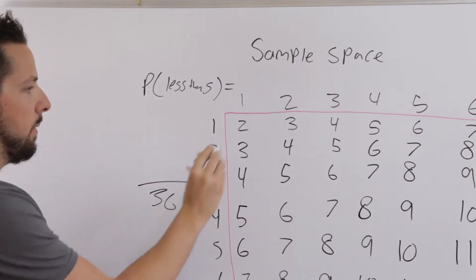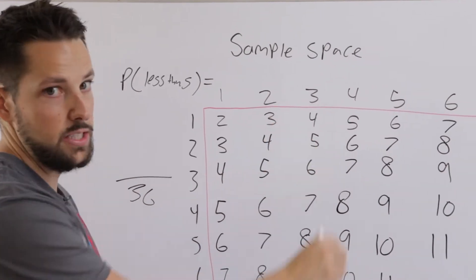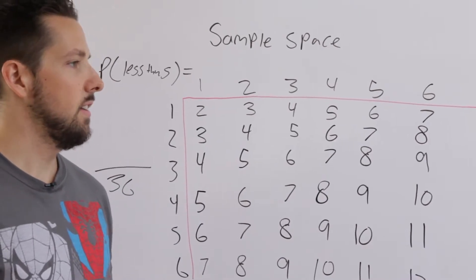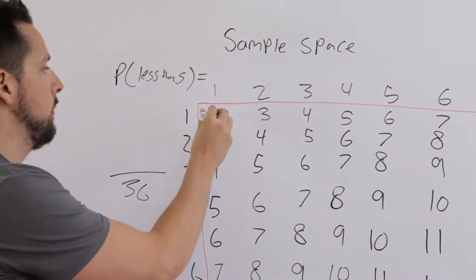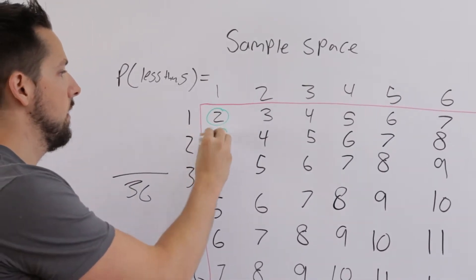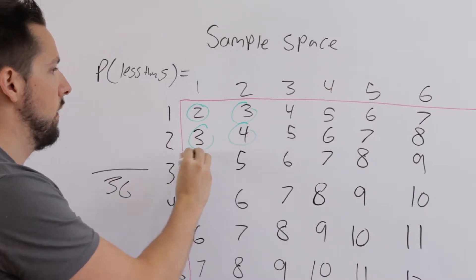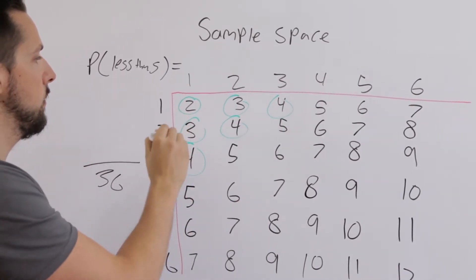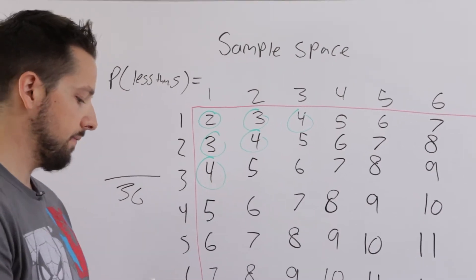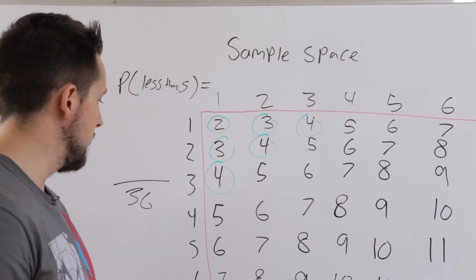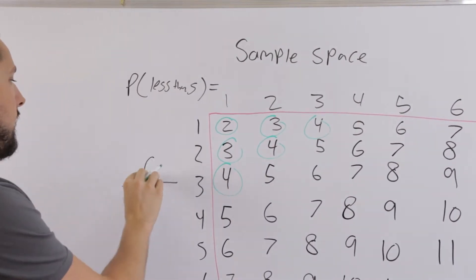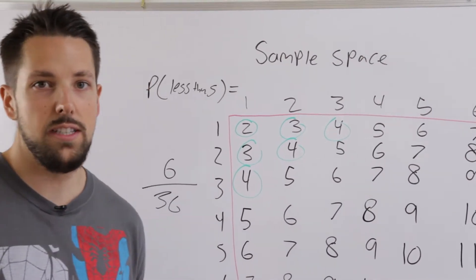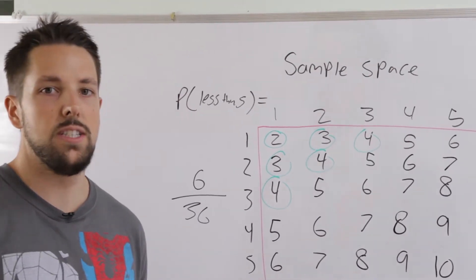I got that by counting all the numbers. Now the desired outcomes less than five — we'll circle them. We have two, three, three, four, four, and four. So counting them up, we have one, two, three, four, five, six. There are six desired outcomes, which means the probability is six over 36, or if we reduce it, one over six.